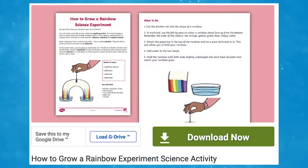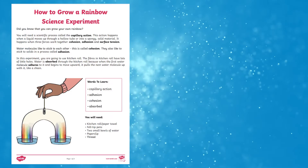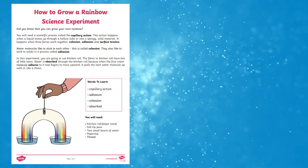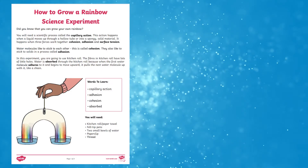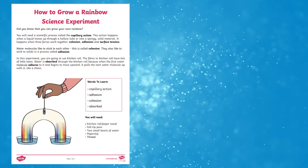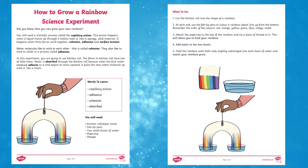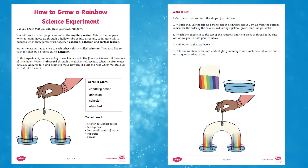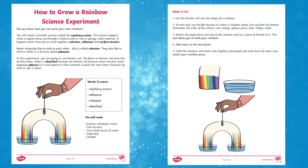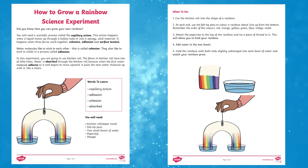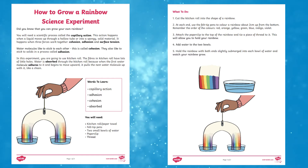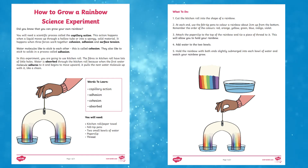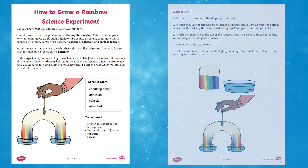You can also check out our how to grow a rainbow experiment science activity. The pack contains a description of the experiment, an explanation of how the experiment works, and some full colour illustrations that demonstrate the experiment being carried out.